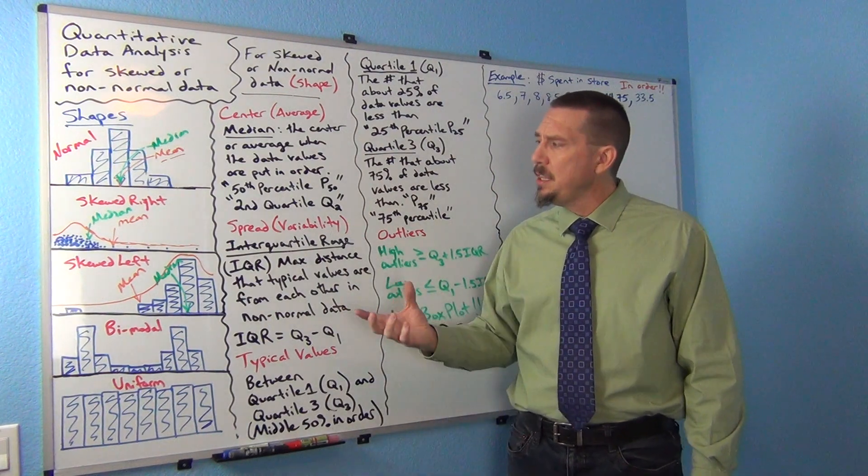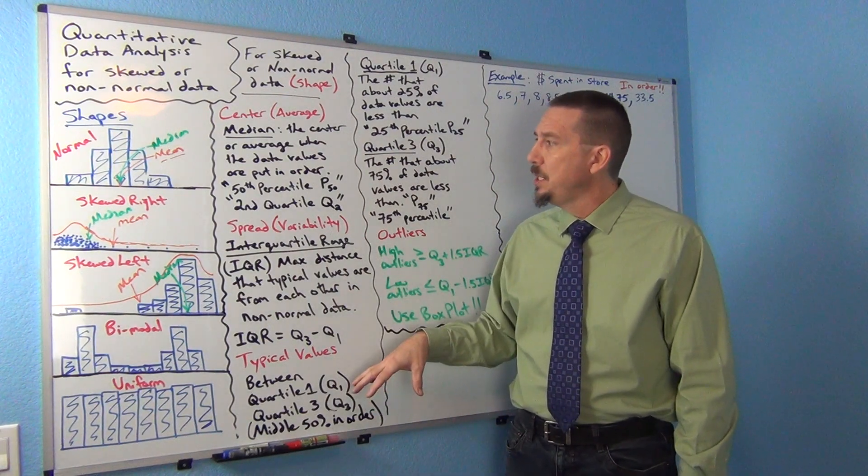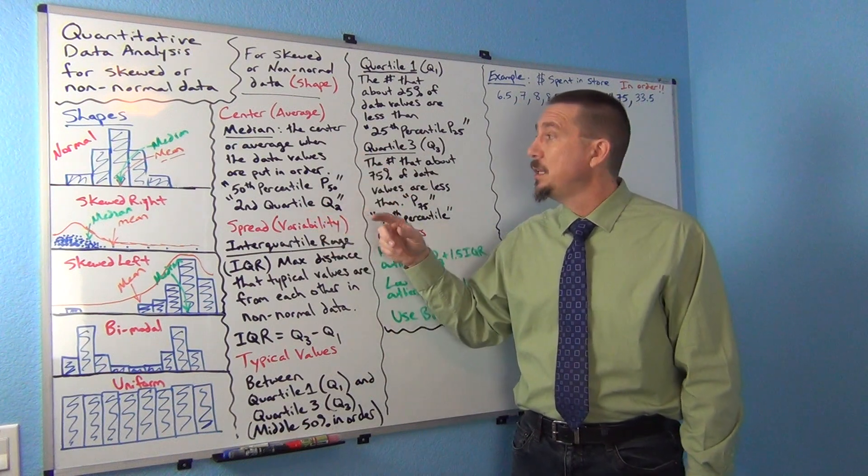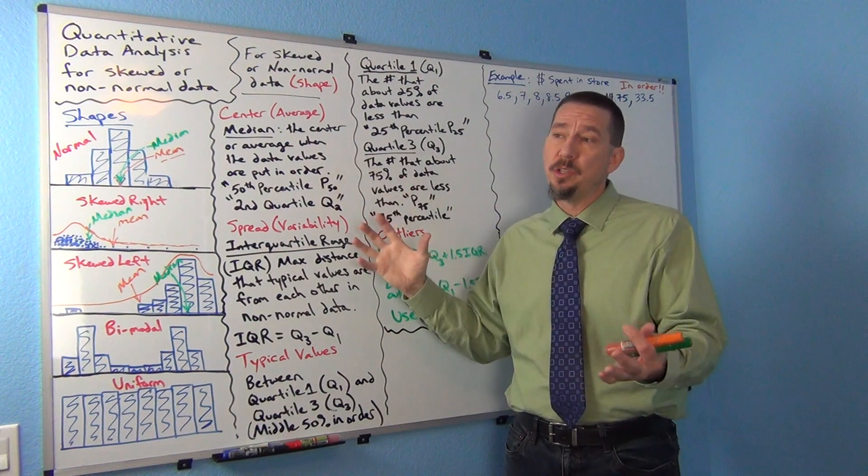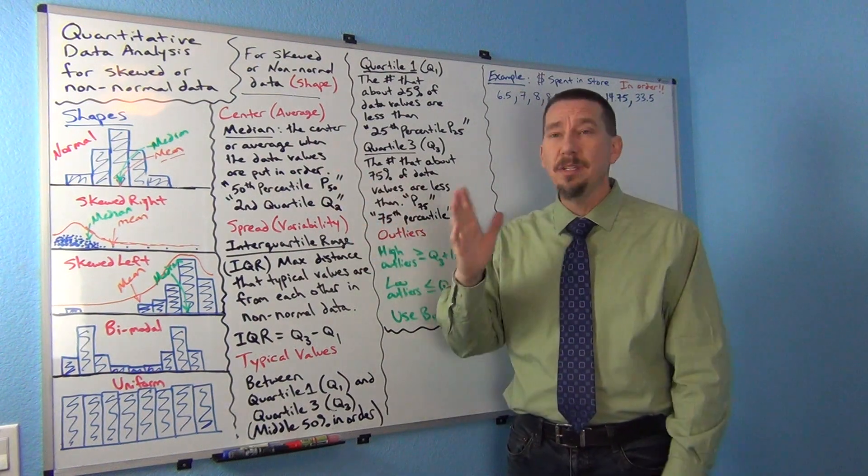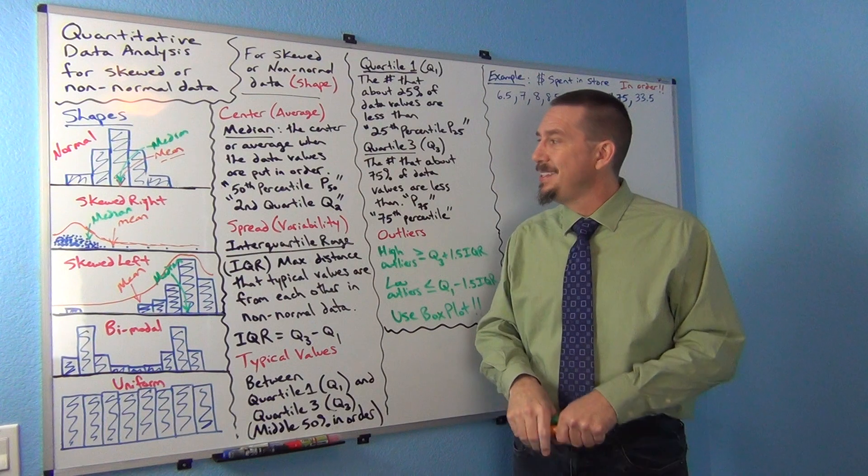Remember that one of the key things about quartiles and the median, because the median is a quartile as well, is that the data values have to be in order. It's all about putting the numbers in order and looking for dividers.